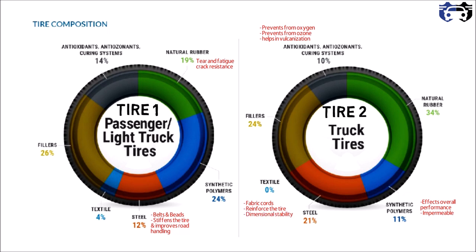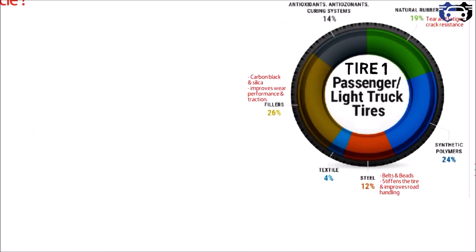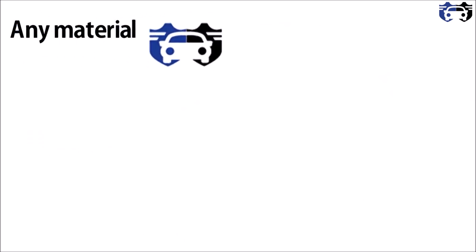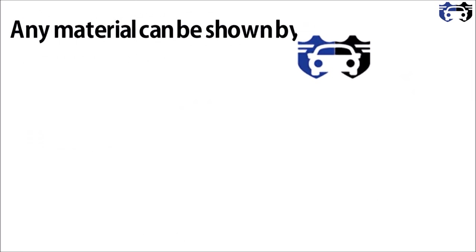Fillers make up 26% in Tire 1 and 24% in Tire 2. The fillers — carbon black and silica — improve wear performance and traction, and also help in reducing rolling resistance.